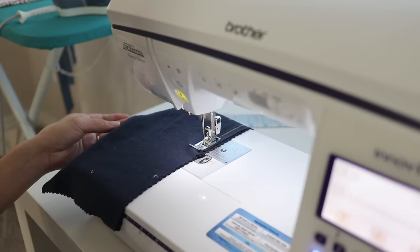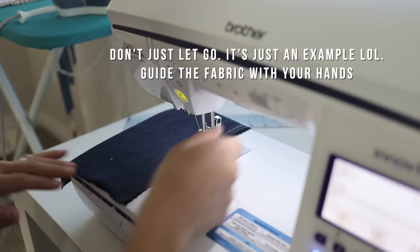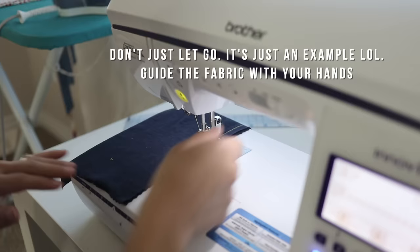There are feed dogs underneath the fabric that help move it along so even if I let go the machine will keep moving the fabric through. All you have to do is guide the fabric so you're sewing on your seam line.